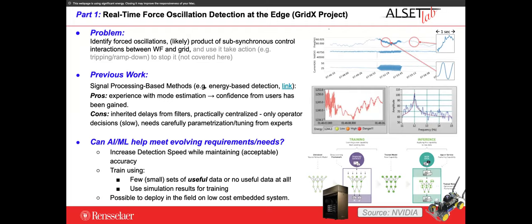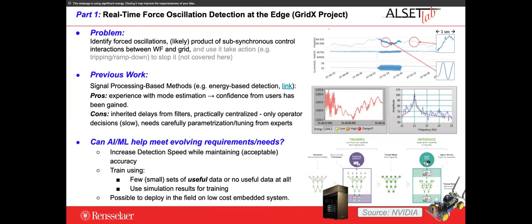If you look at previous work, they are basically signal processing-based methods. There is a link to some of the work done starting in 2011. Essentially, you have energy band detectors — if your spectrum shows a high peak at 12 Hz, you can calibrate some energy detector through thresholds. This is attractive because people have gained confidence in the method, but it has a lot of disadvantages: there are inherited delays from the filters, the whole approach is entirely centralized, and it really needs careful parametrization from experts.